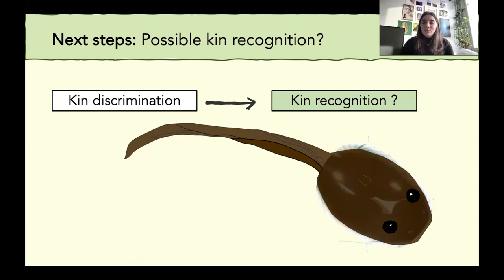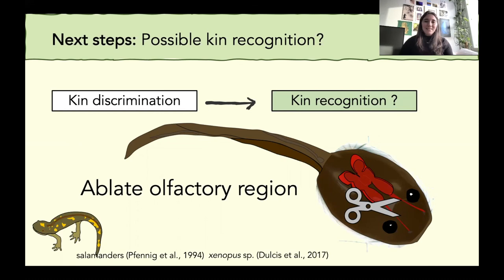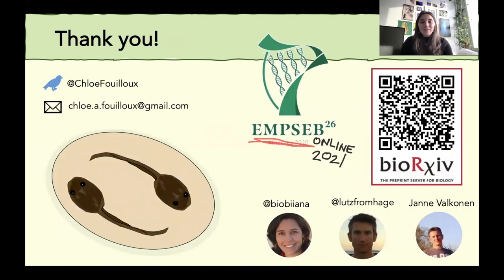The next steps for me is establishing possible kin recognition within the species. I plan to do this by ablating the olfactory region so we would see that when they can't smell each other that the ability to distinguish kin would go away. And this is based on different olfactory recognition mechanisms in other animals such as salamanders and xenopus tadpoles. Thank you so much for listening and if you're interested in reading about our work, we have a pre-print up. Also thank you so much to MSEB for hosting and to my collaborators and friends for supporting me. Bye.